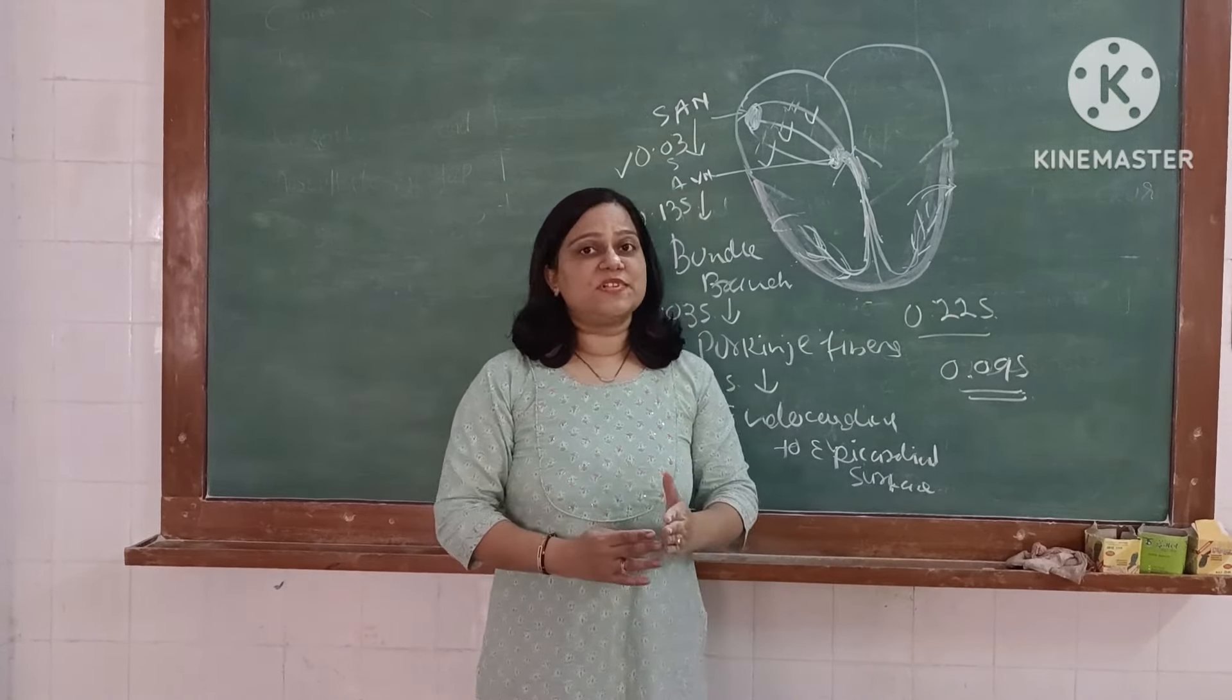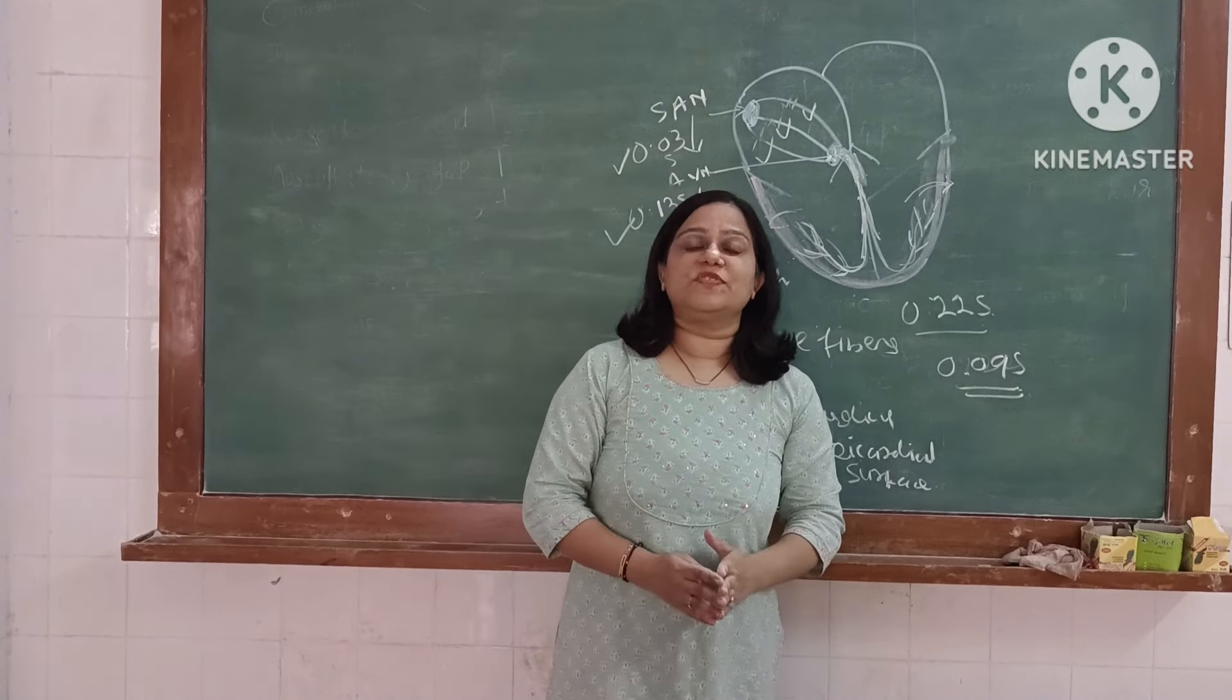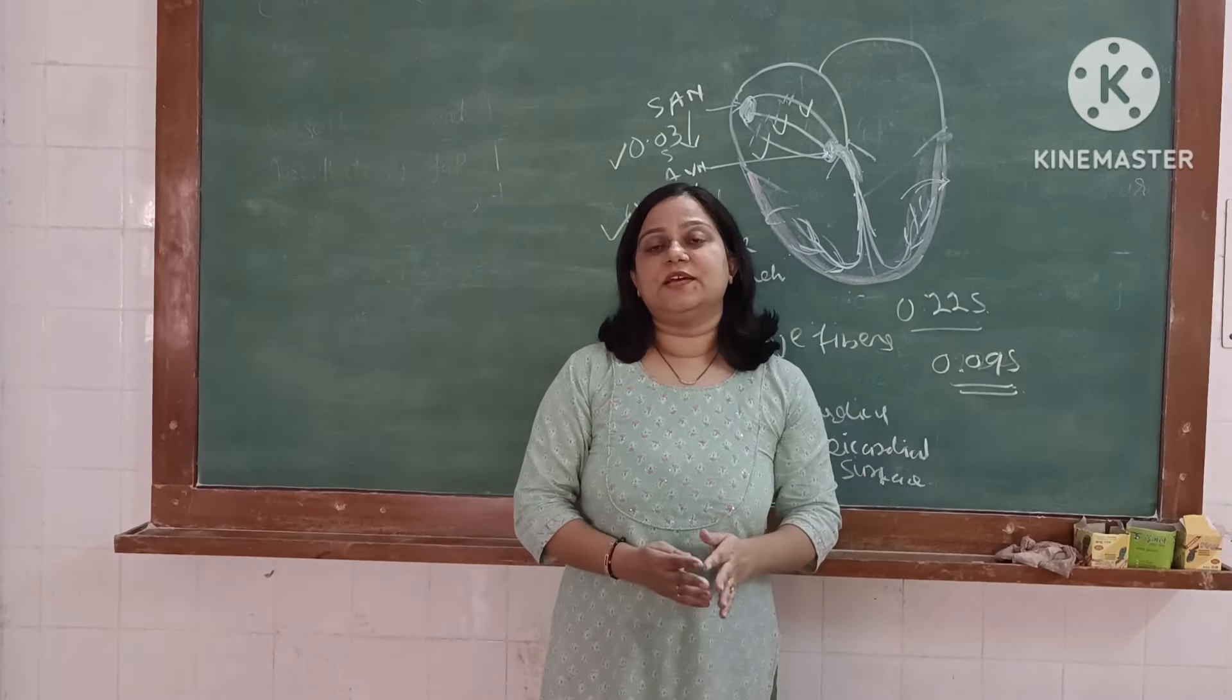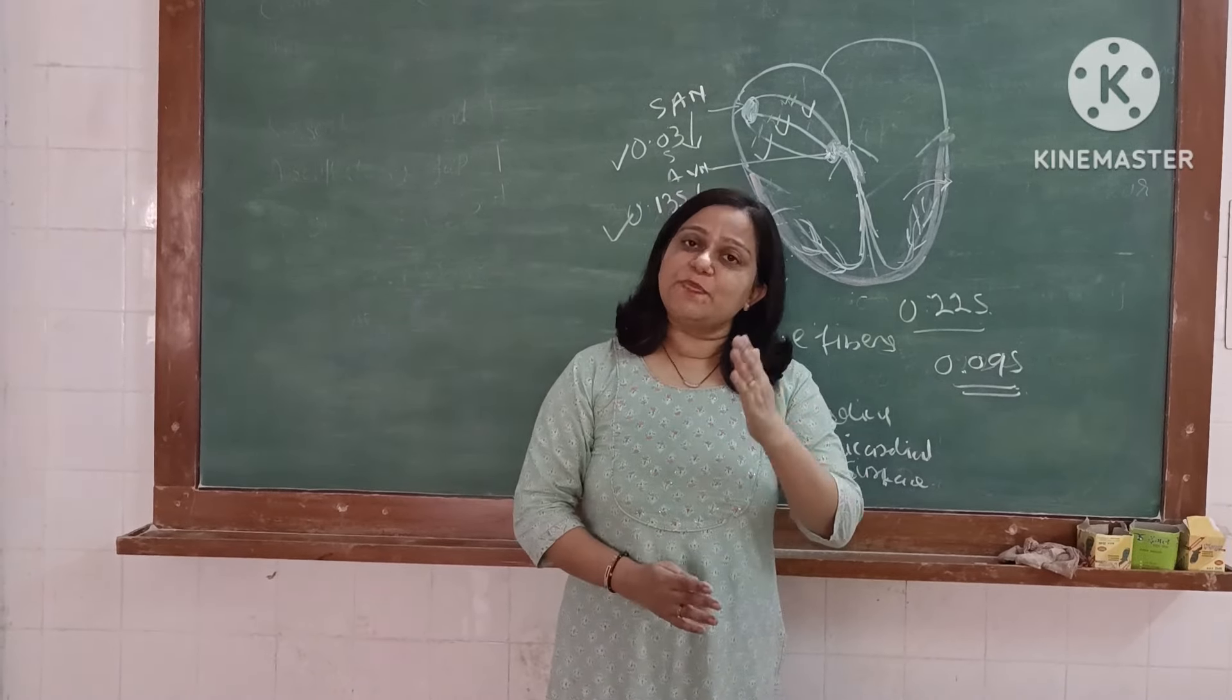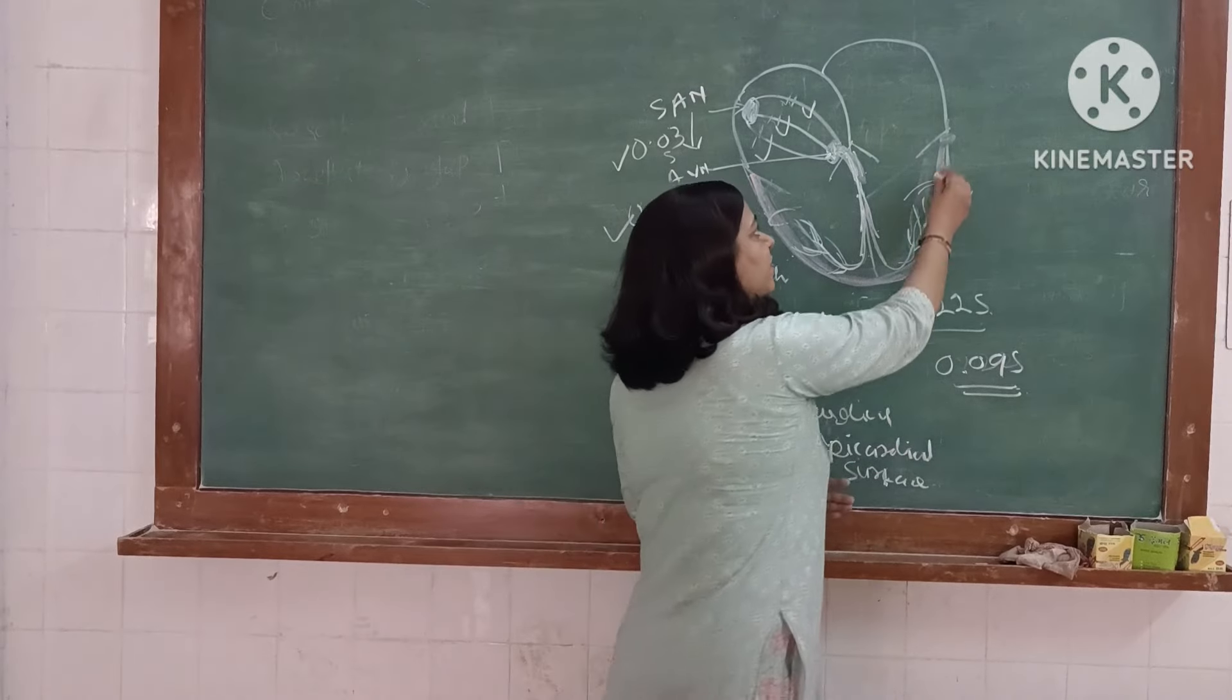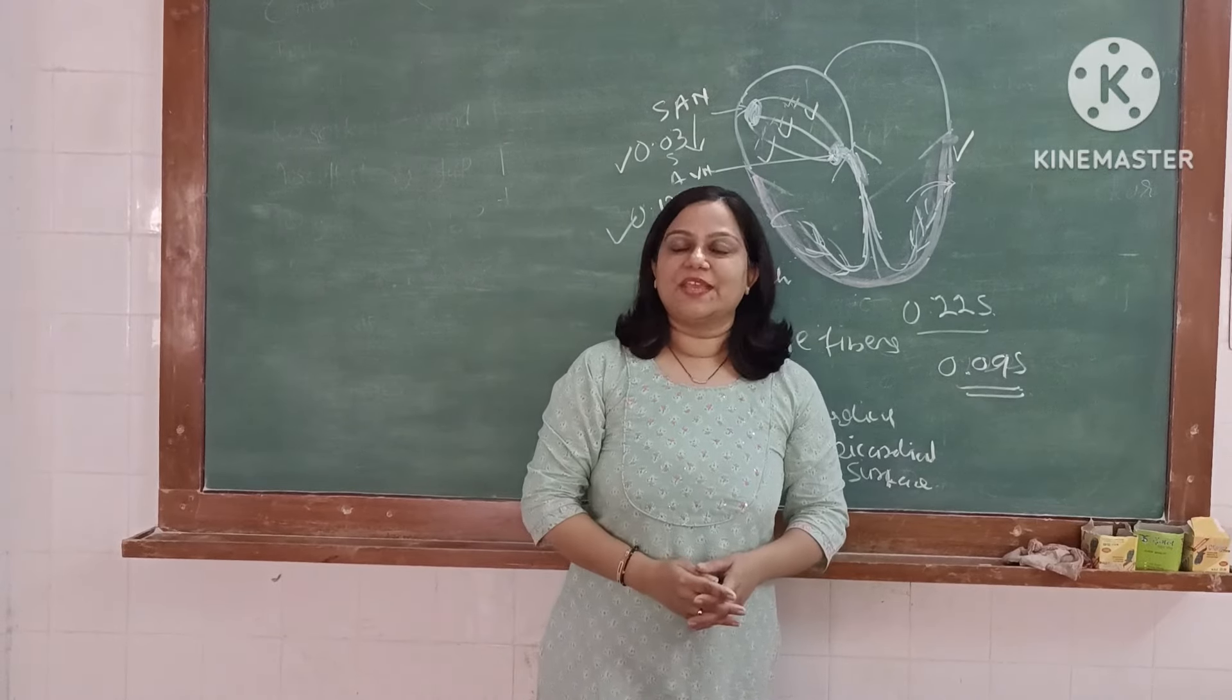Once the impulse reaches the interventricular septum, the first part of the interventricular septum to depolarize is the left side. The last part of the ventricle to depolarize is the posterobasal portion of left ventricle. Thank you.